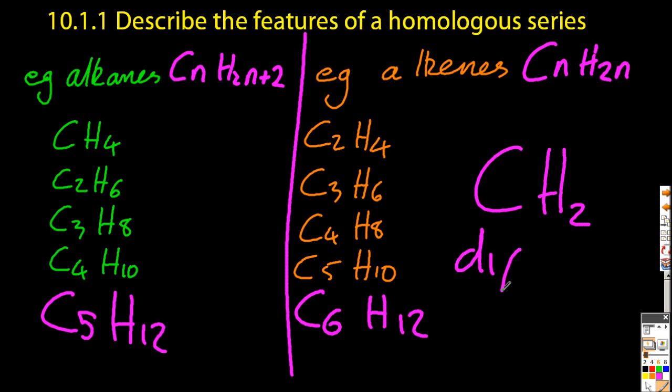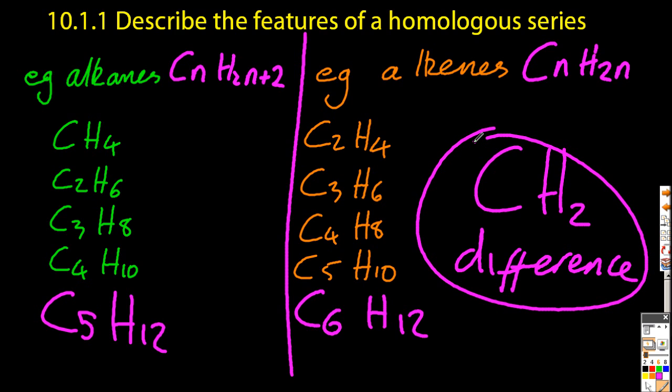Adjacent members in a homologous series are different by CH2. It doesn't matter which series it is. Alcohols, ketones, aldehydes.